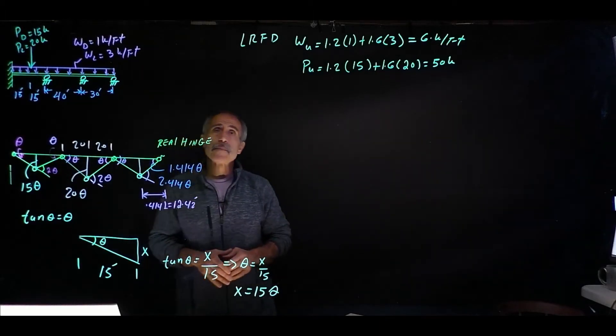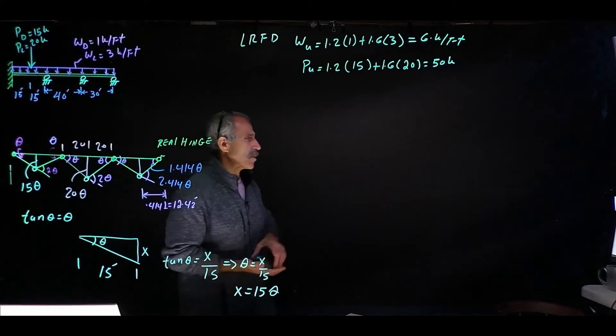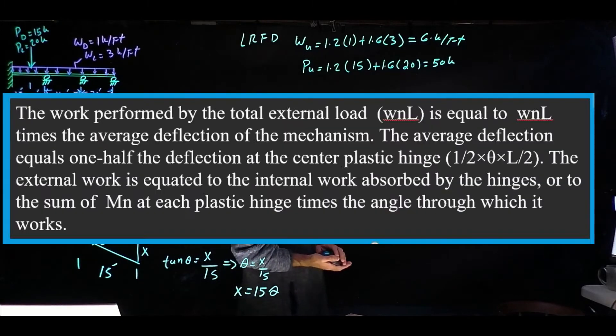Let me erase this and we continue. So now we're going to go ahead and take a look what I have on the board. The work performed by the total external load, which is basically your uniform distributed load times L, is equal WUL times the average deflection of the mechanism. So the average deflection equals one half of the deflection that we have, we just calculated that. And then the external work is equal to the internal work absorbed by the hinge, or sum of the MU at each plastic hinge, times the angle through which it works.